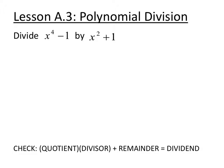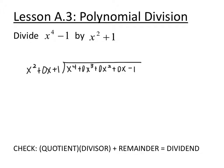Now we have x to the 4th minus 1, and we want to divide that by x squared plus 1. Whenever you have missing terms, you always want to have placeholders — put in zeros for those. So the setup: I'm going to change the divisor to x squared plus 0x plus 1 with the placeholder for the missing x term. And the dividend becomes x to the 4th plus 0x cubed plus 0x squared plus 0x minus 1.